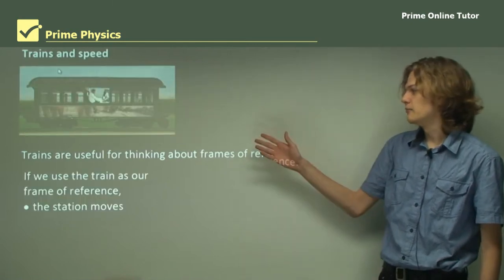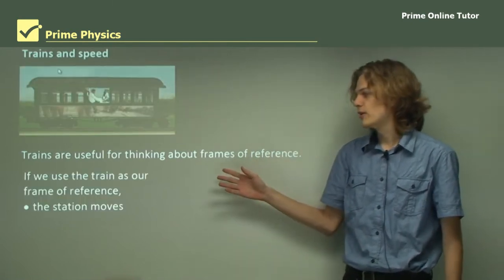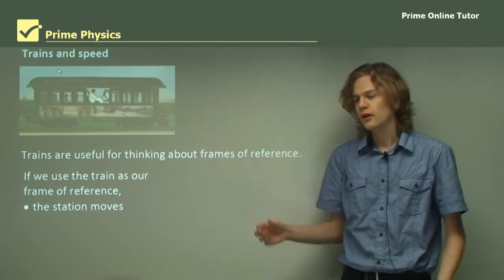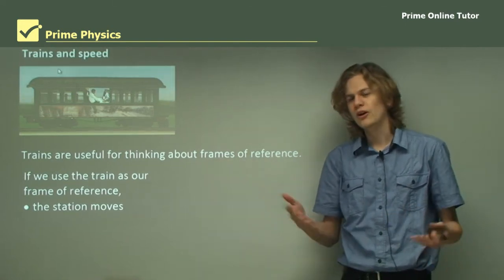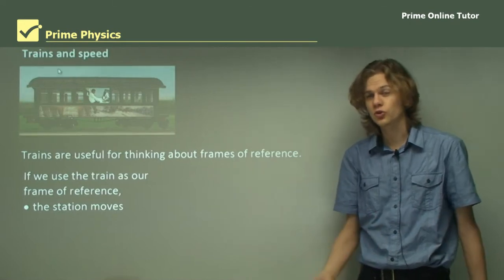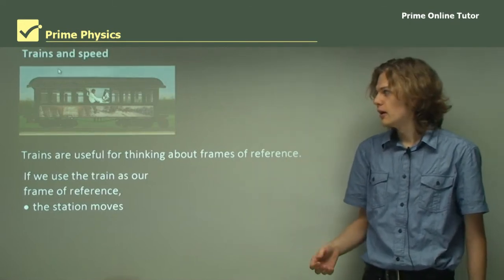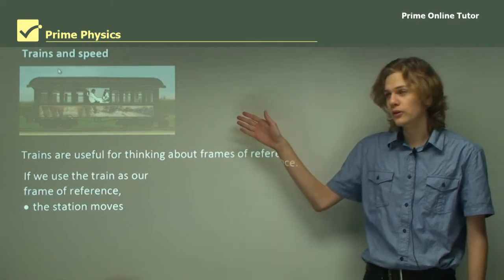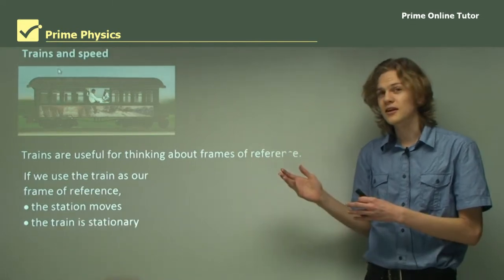If we're inside the train then we can use the train as our frame of reference. From our point of view we're fairly still — things act normally in our frame of reference. You can toss a ball and it'll come back down while you're inside the train. And it's the outside that's moving, so in this case our train is stationary.